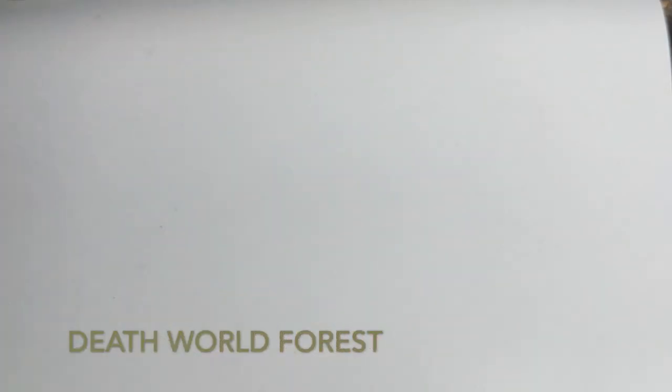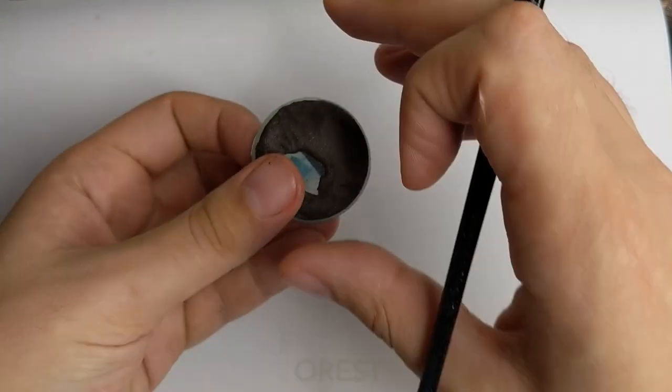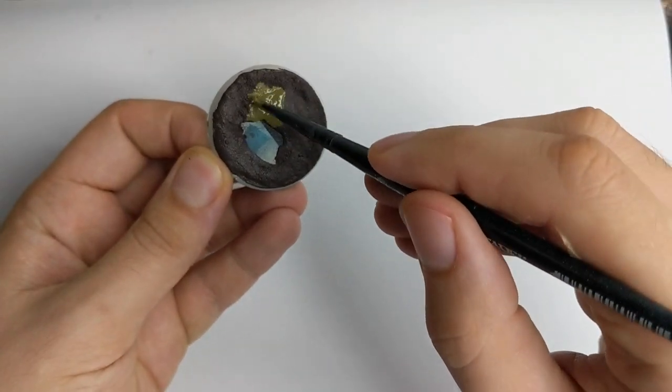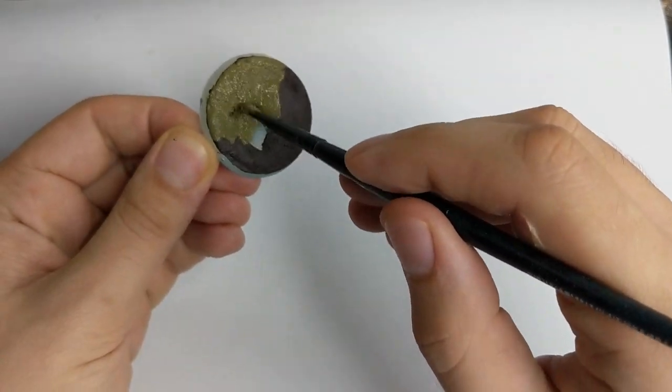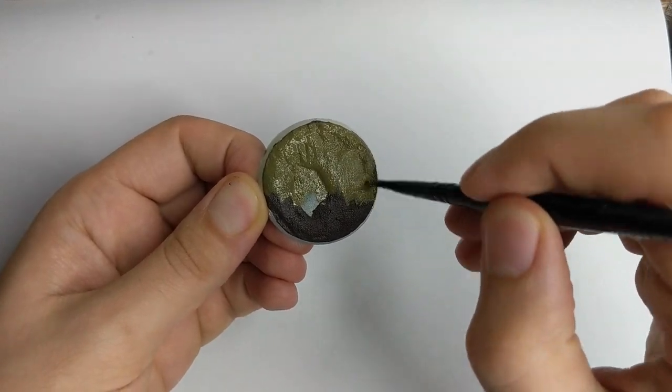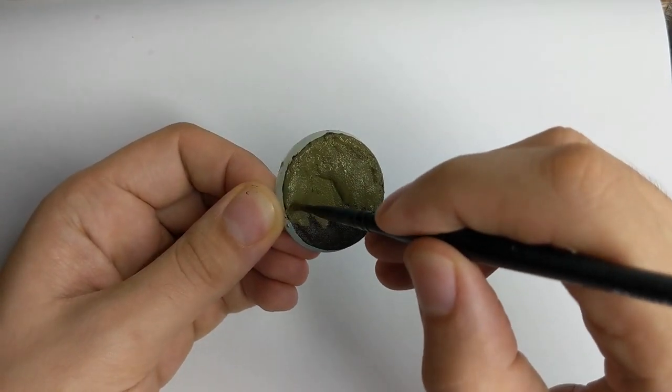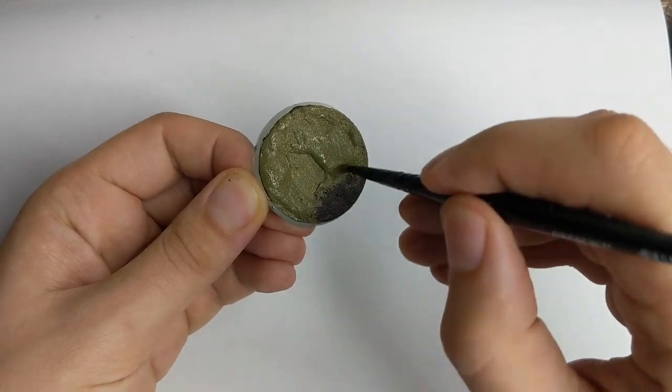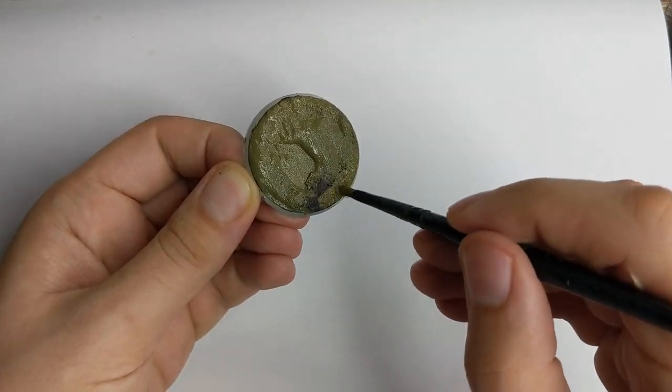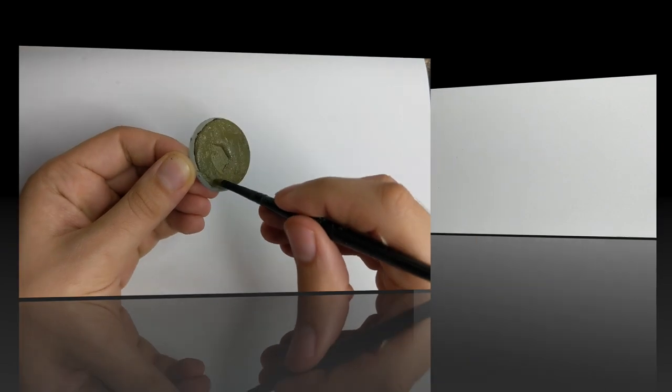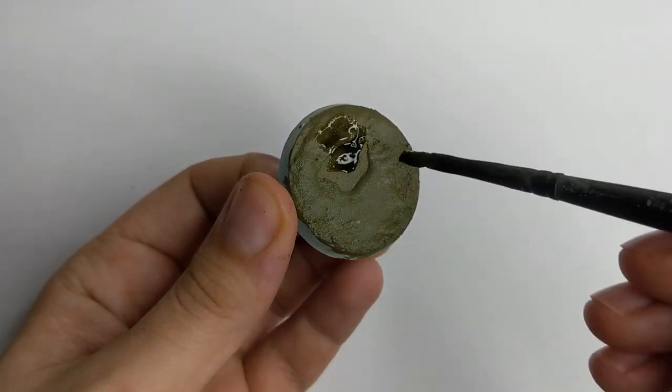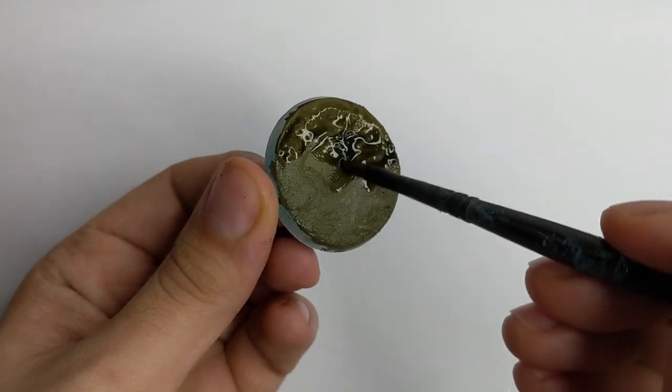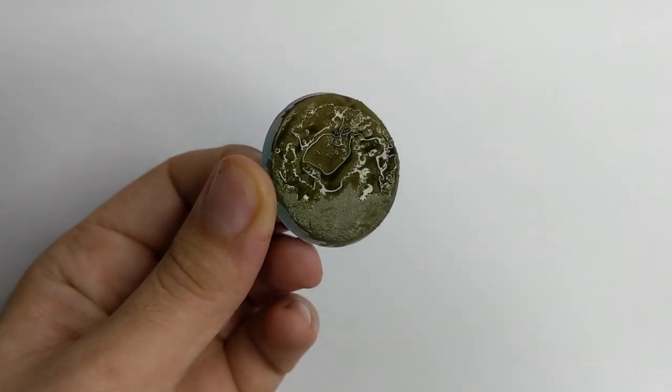Once it's dried you can paint the whole base in a green color. I chose Death World Forest Green but you can paint it in any green that you have. Just depends on what brightness of the base you want to achieve. After it's dried I will shade the whole base with Athonian Camoshade. This will be a very thick coat of it and then I will properly let it dry for like half an hour.